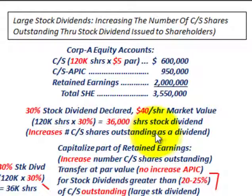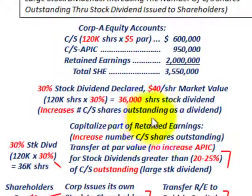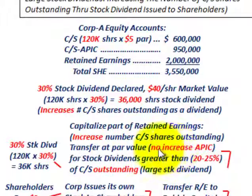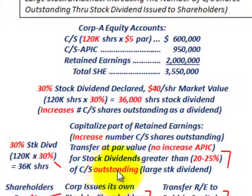It's not called a stock split — it's acting like one, but we call it a dividend and handle it accordingly. We're transferring retained earnings to paid-in capital, specifically at the par value. There will be no increase in additional paid-in capital for common stock on this dividend. This treatment applies to stock dividends greater than 20 to 25% of the common stock outstanding — a large stock dividend.